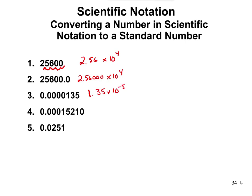For the next one, let's look at significant figures first. This one has 1, 2, 3, 4 — and that trailing zero is going to be significant because it's at the end of a number with a decimal point. So this one has five significant figures. We're going to move the decimal point to the right 1, 2, 3, 4 times, giving us 1.5210 times 10 to the negative 4. And the last one: moving the decimal to the right two times gives 2.51 times 10 to the negative 2.